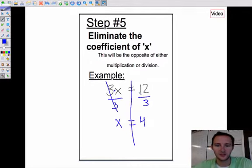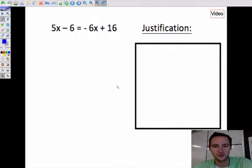Step five is eliminate the coefficient of x. The coefficient of x is whatever number is multiplied by x. In this case we have 3x, so we're going to divide by 3. That's the opposite of multiply. Dividing by 3 on both sides gives us x equals 4, and that is all you have to do to solve an equation. I know I went through that quickly. If you need to go back and look at any of those again or listen to it again, you can do that.